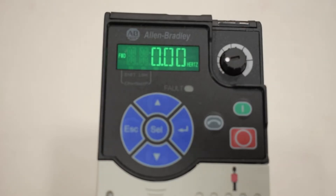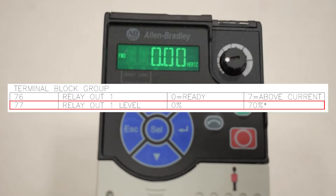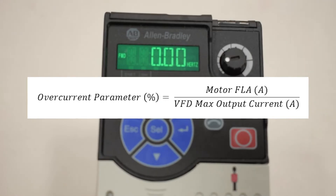Navigate to the VFD parameters table on the LMEC control drawings. The motor overcurrent parameter is located at T077. This parameter value is calculated by dividing the motor FLA by the VFD's maximum output current.